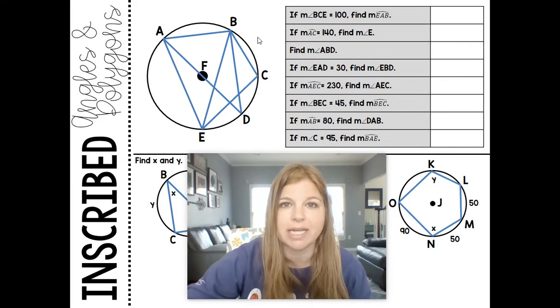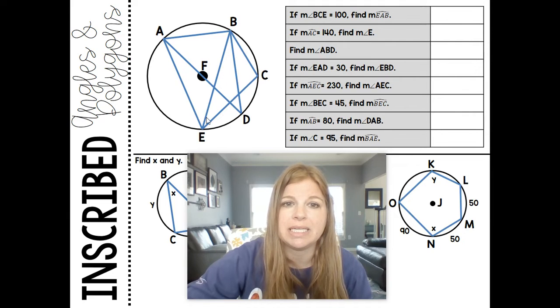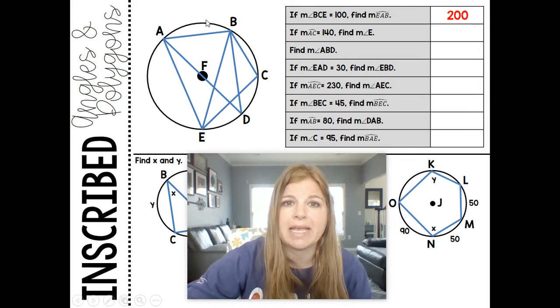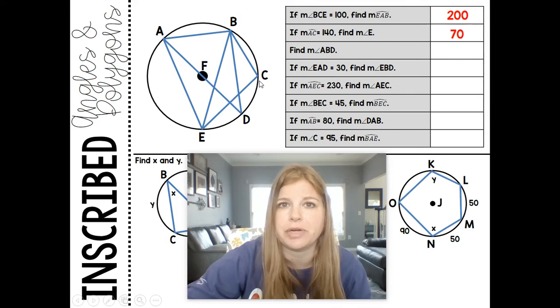Let's look at this diagram. If the measure of angle BCE equals 100, find the measure of arc EAB. If BCE is 100, then the arc it opens up to should be double it, so that arc is worth 200. If the measure of arc AC is 140, which opens up to angle E, then the measure of angle E is 70. AEC is another name for it.